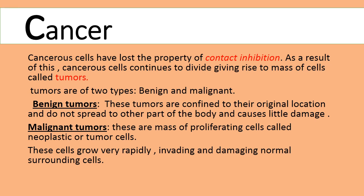When cancerous cells divide without any control and the number of cell divisions increases in the same place, they form a mass of cells — and that is nothing but a tumor. Tumors are of two types based on their properties: benign and malignant. Benign tumors are confined to their original location — they will not spread from one part of the body to another. For example, if formed in the uterus, they remain restricted to the uterus only.